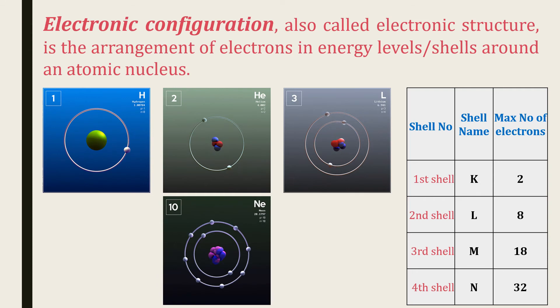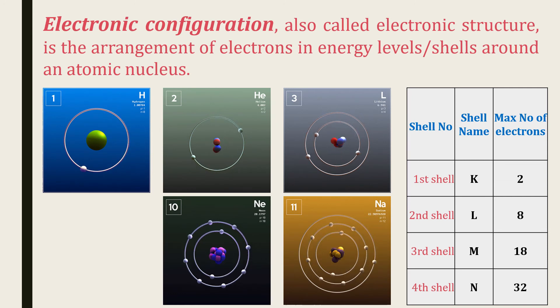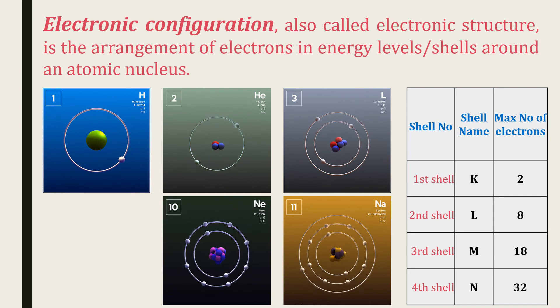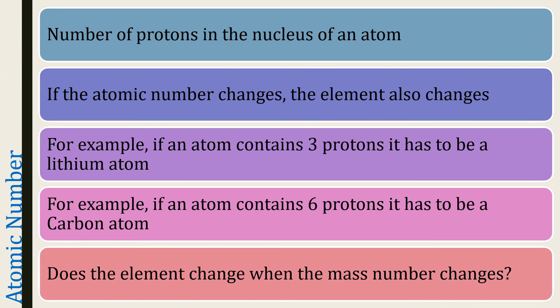Now let's look at the electronic configuration of sodium, which has a total of 11 electrons. The first shell accommodates 2 electrons, the second shell accommodates the maximum of 8 electrons, and the remaining 1 electron is accommodated in the third shell, that is the M shell. The number of protons present in the nucleus of an atom is known as the atomic number. If the atomic number changes, the element also changes. For example, if an atom contains 3 protons, it has to be a lithium atom.